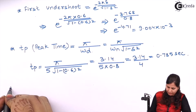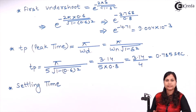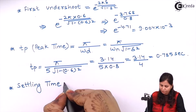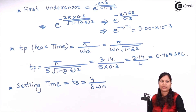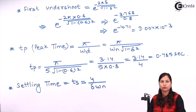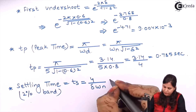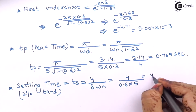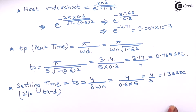Now we calculate settling time. If no tolerance band is specified in the question, calculate for the 2% tolerance band. The formula for settling time for 2% tolerance band is Ts = 4 / (δ × ωn). Substituting δ = 0.6 and ωn = 5: Ts = 4 / 3 = 1.33 seconds. Settling time for 2% tolerance band is 1.33 seconds.